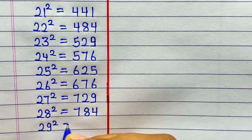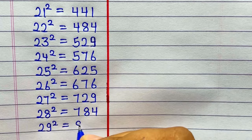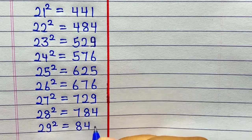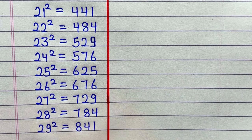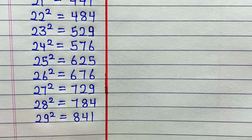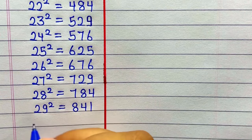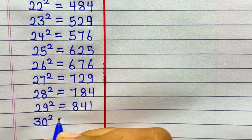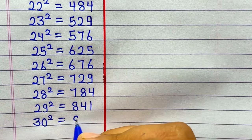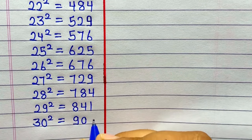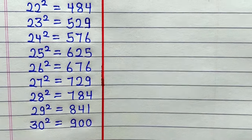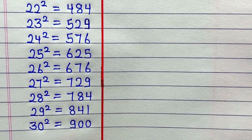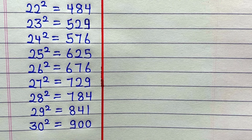29 ka square hai 841. 30 ka square hai 900. So now let's see cube 1 to 30.